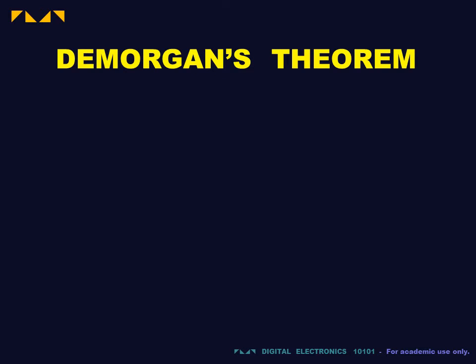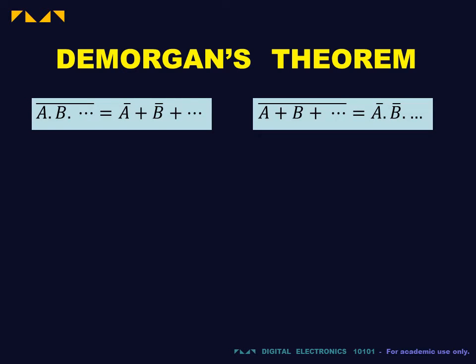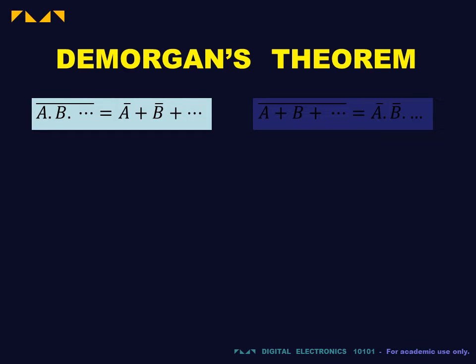An important tool for logic simplification is De Morgan's theorem, which can be used to reduce NAND and NOR expressions. It is best applied as a reduction procedure.